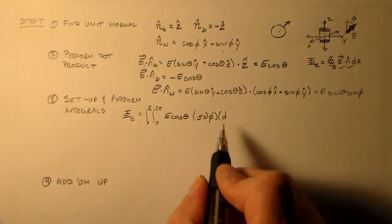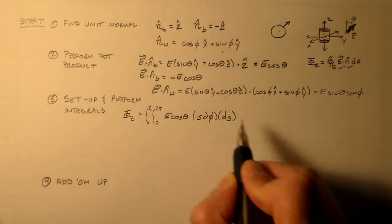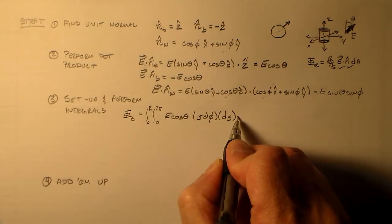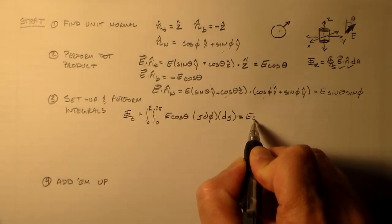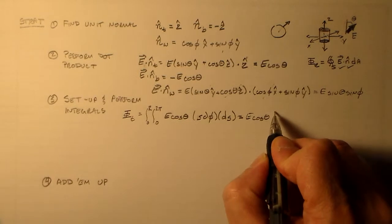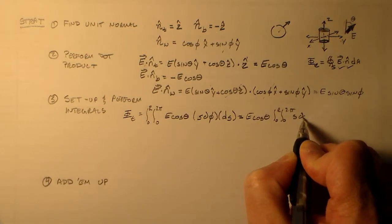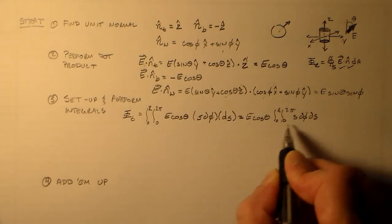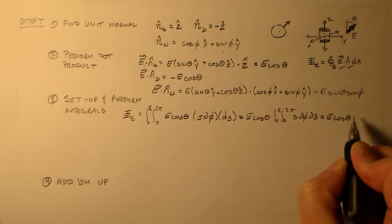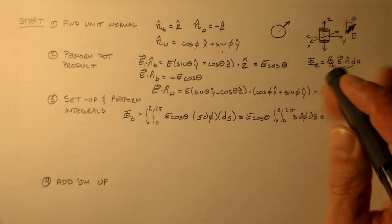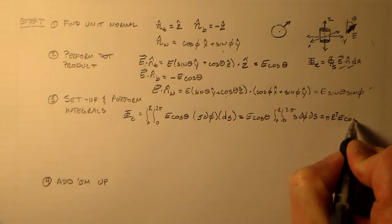And if we do that, we just end up with e cosine theta times the double integral 0 to r, 0 to 2 pi, s d phi ds. And this is just the area of a circle, which is e cosine theta, or, should do pi r squared e cosine theta.